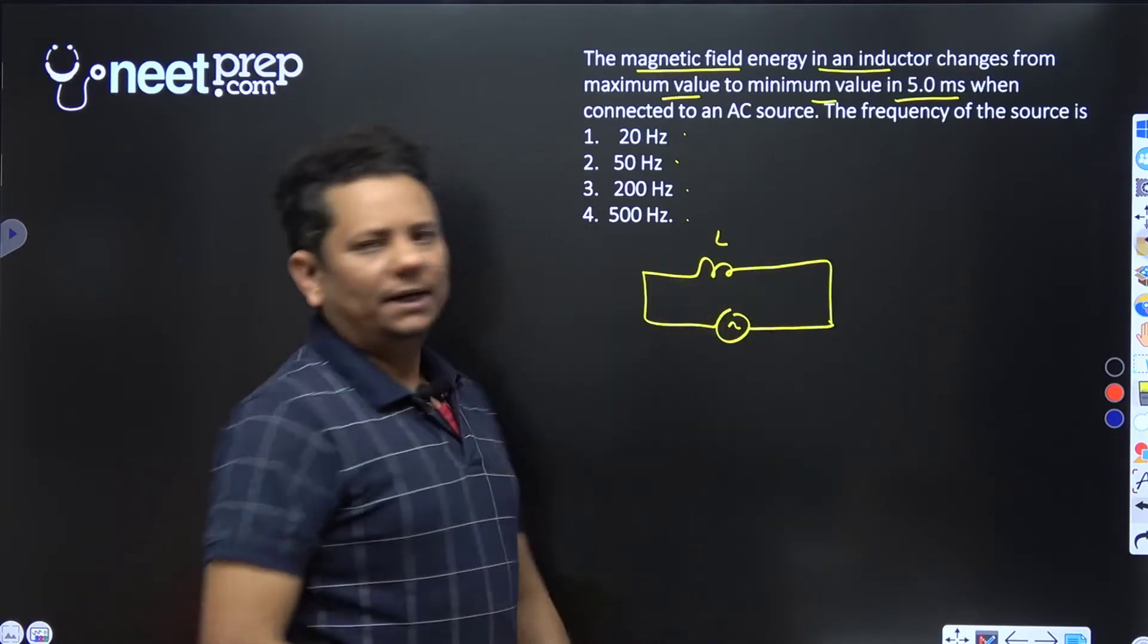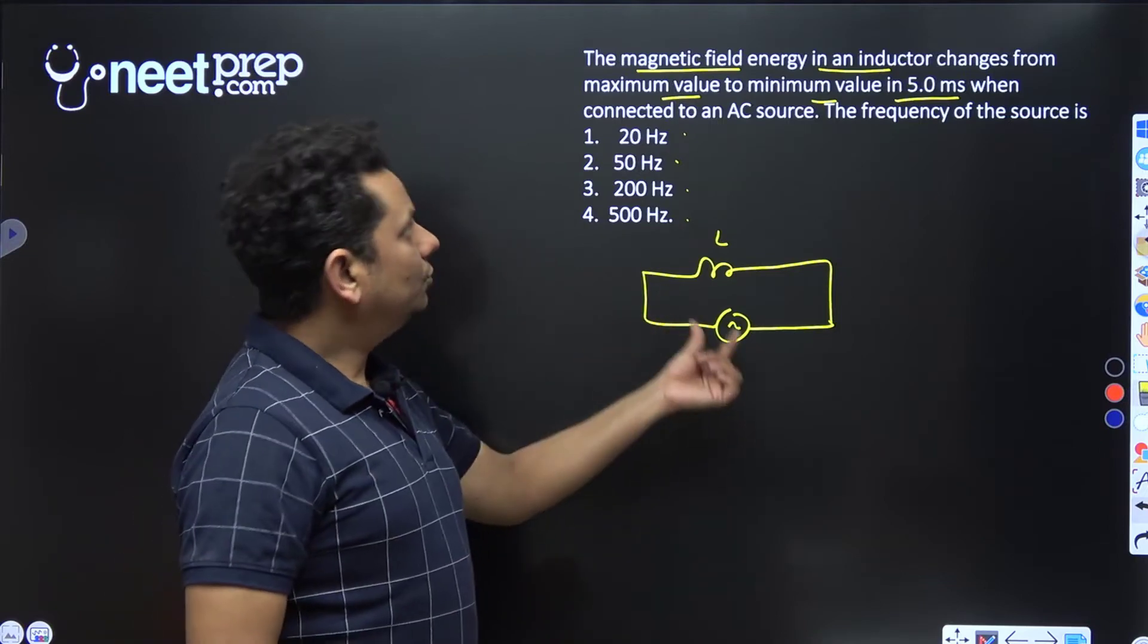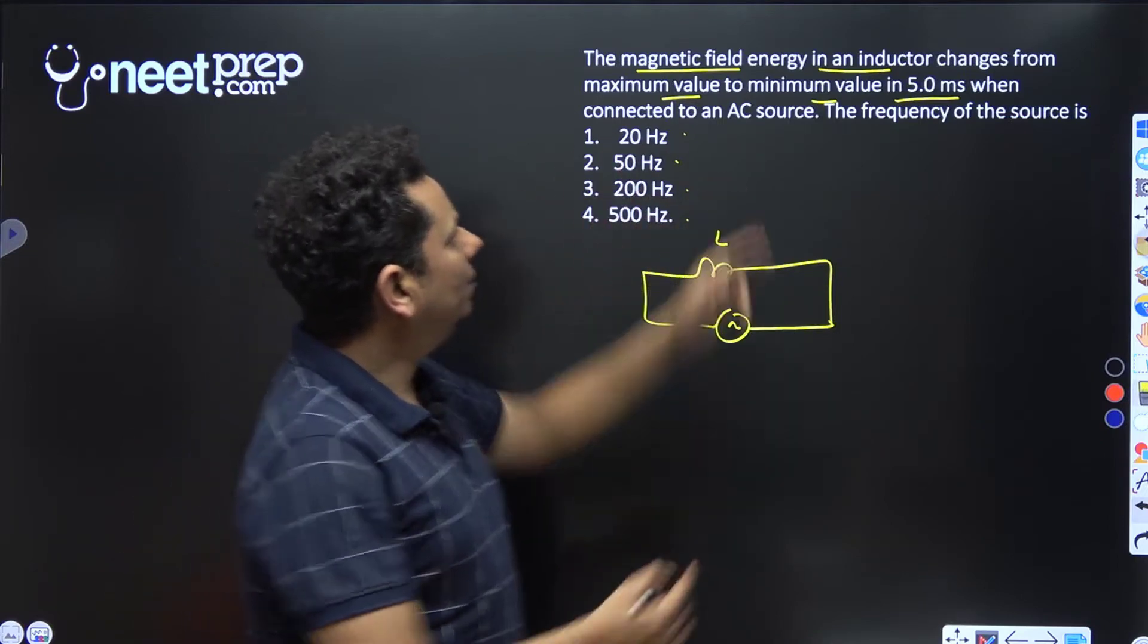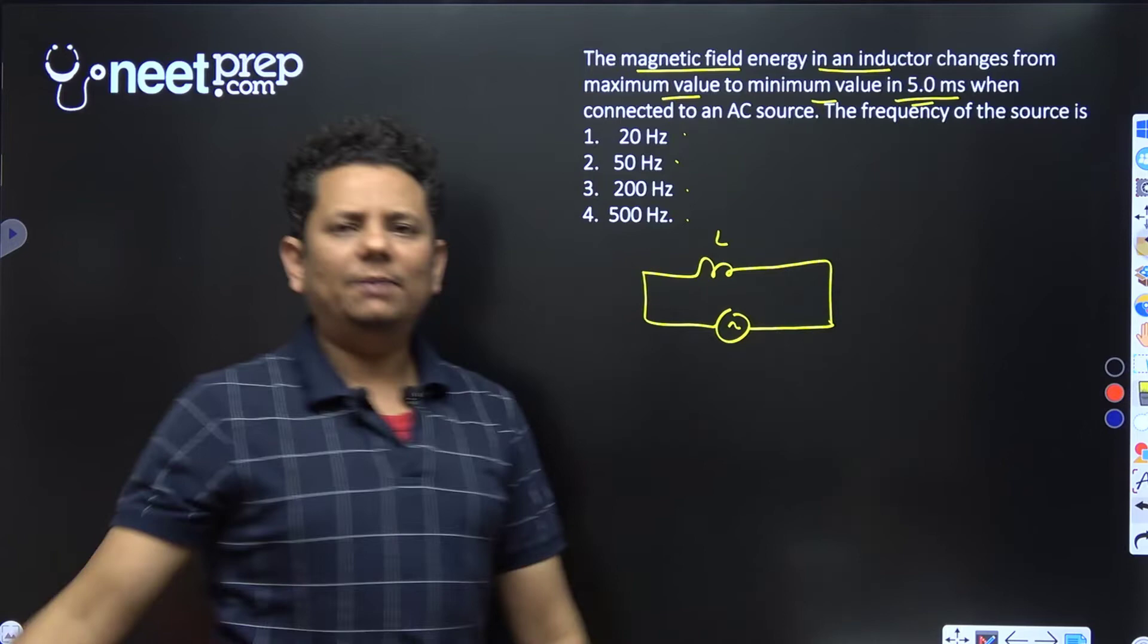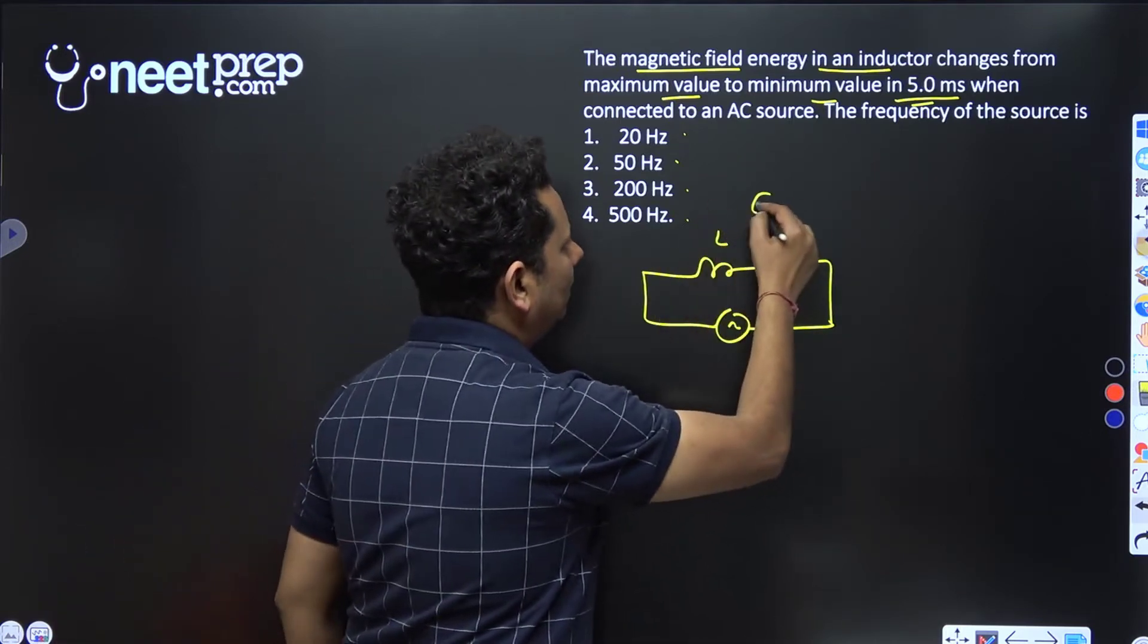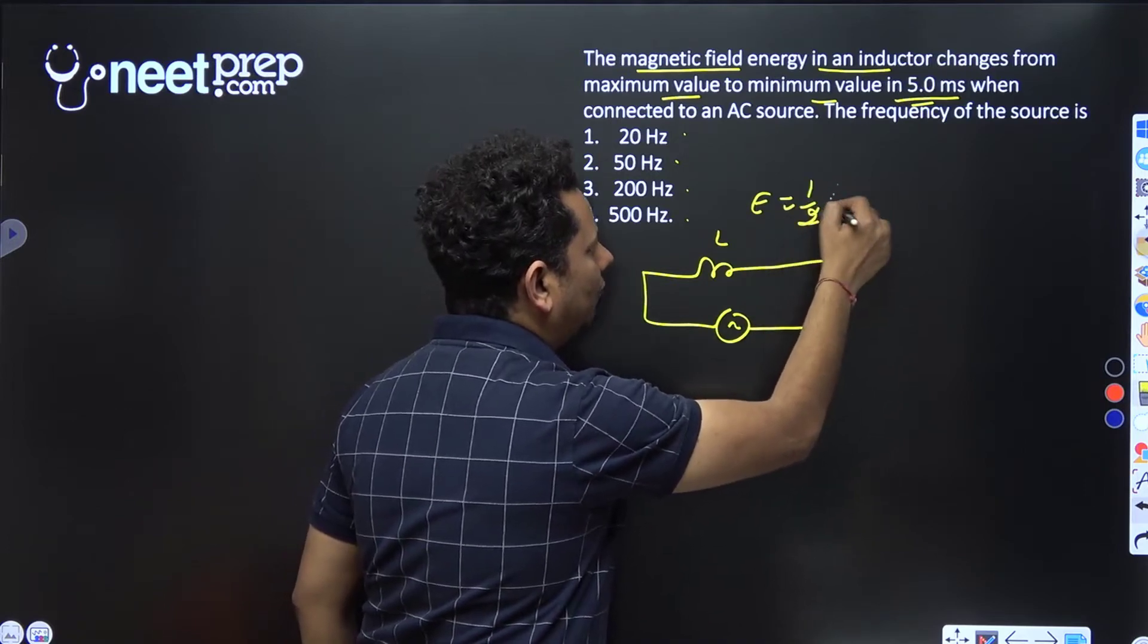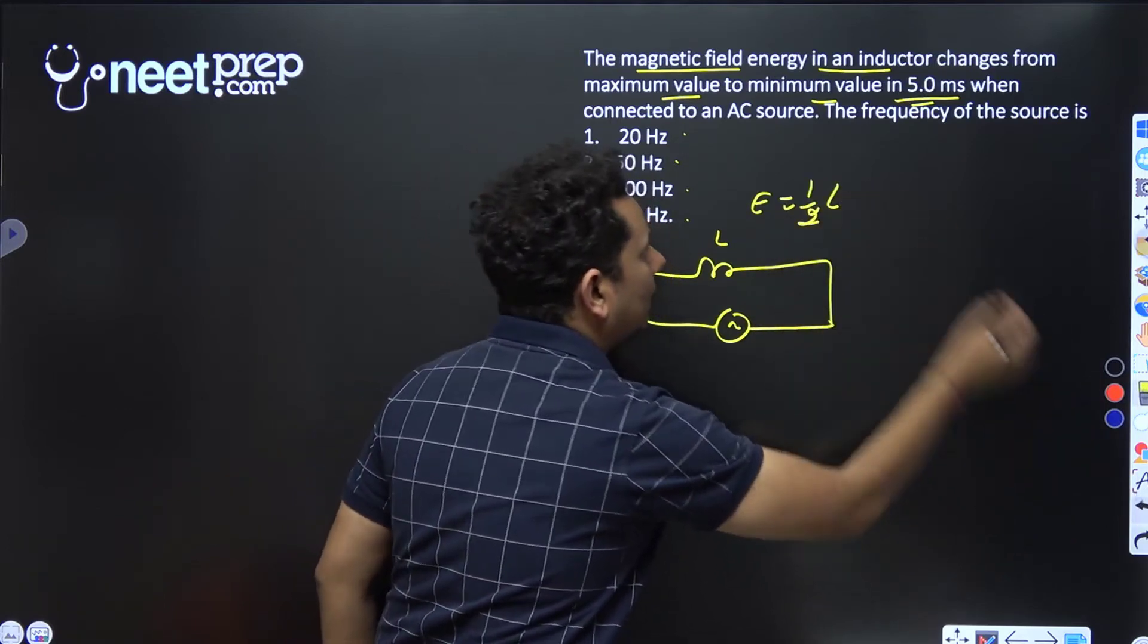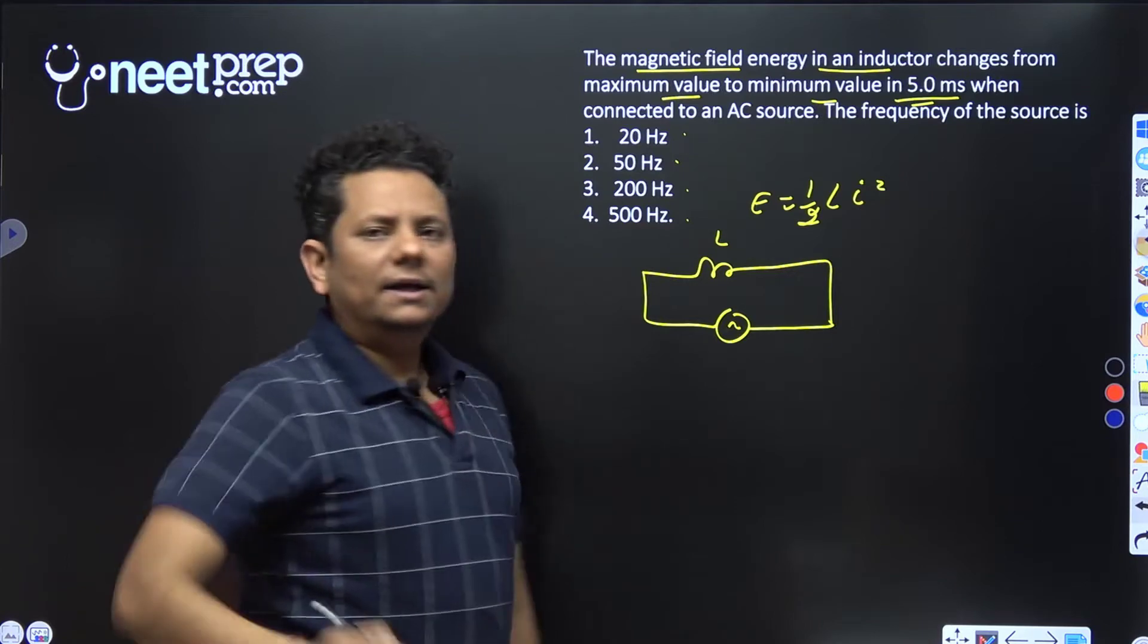The time between maximum and minimum value is five milliseconds. The energy in an inductor is given by E = (1/2)LI².